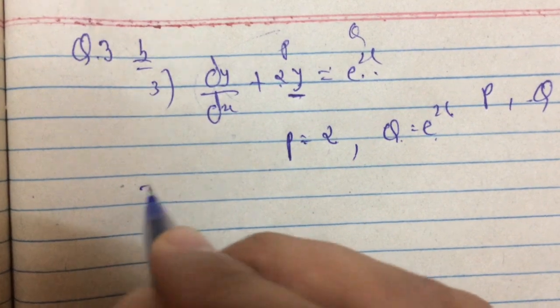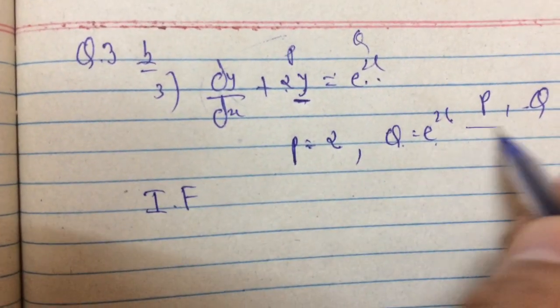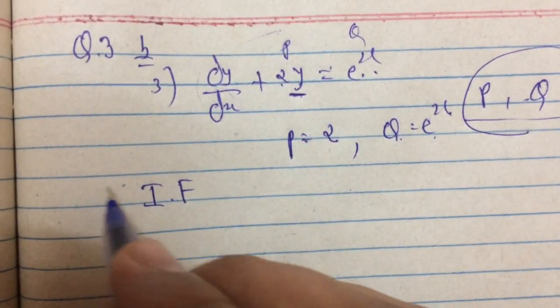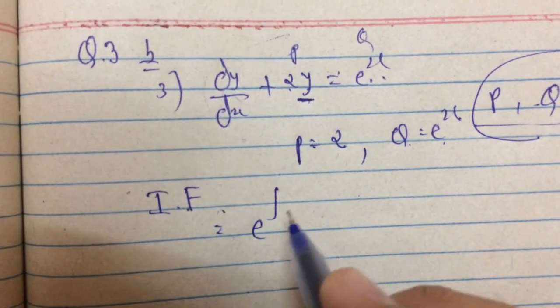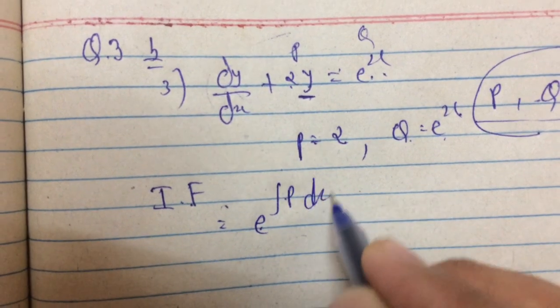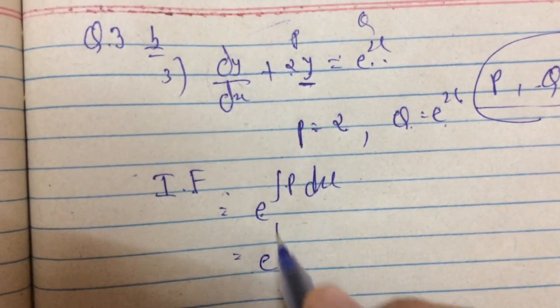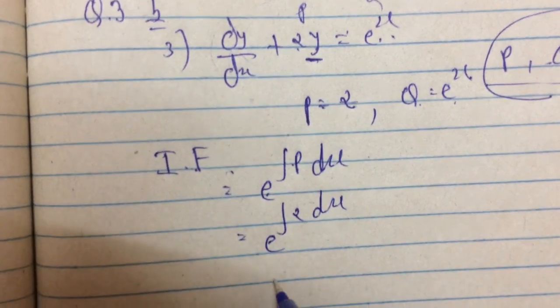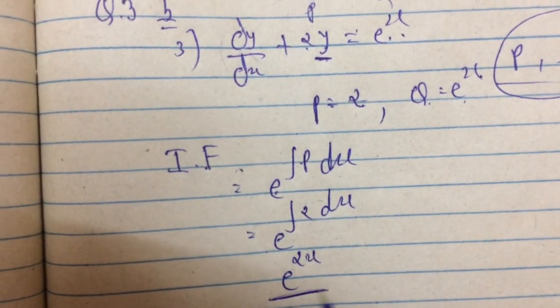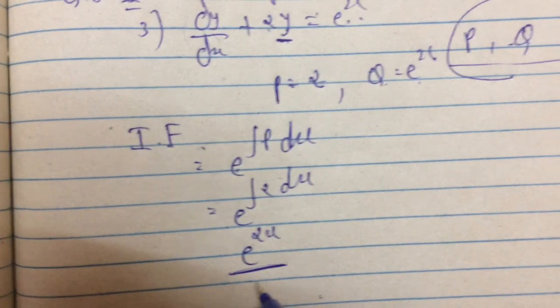Now for this P and Q form, the first step is to find the integrating factor IF. What is IF? It's e raised to the integration of P dx. The P value is 2, so the integration of 2 dx gives us e raised to 2x. So our integrating factor is e raised to 2x.